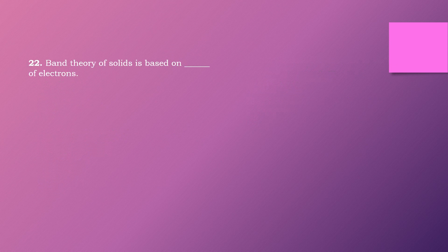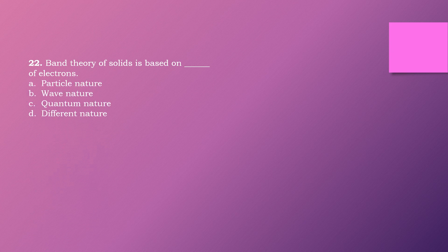Question twenty-two: Band theory of solids is based on the dash of electrons. Options are: particle nature, wave nature, quantum nature, different nature. The right answer is option B: wave nature. Band theory of solids is based on the wave nature of electrons.